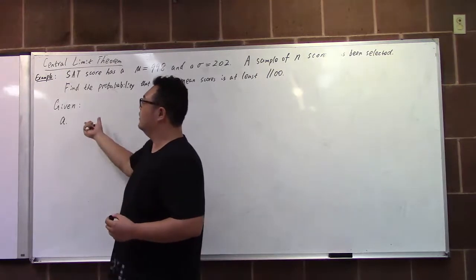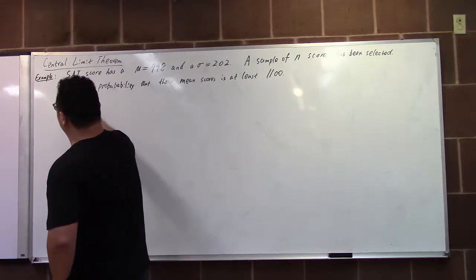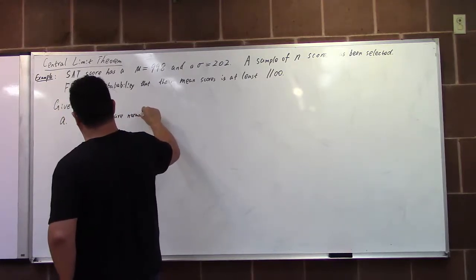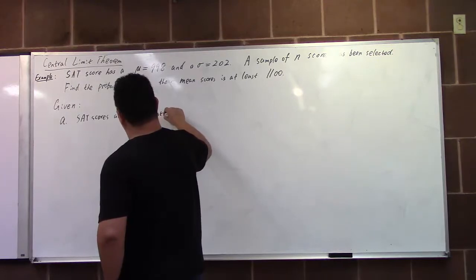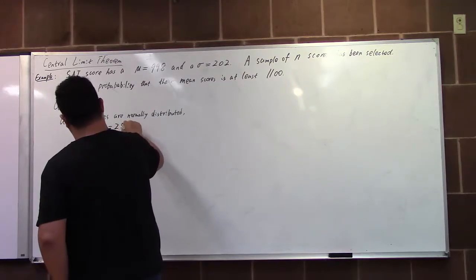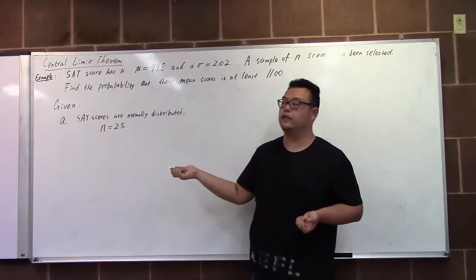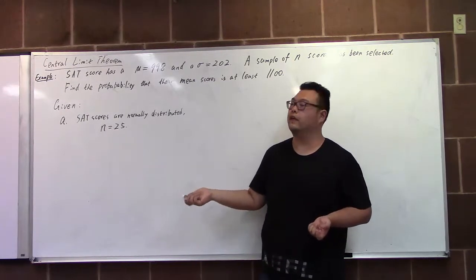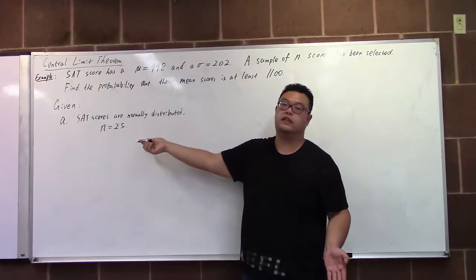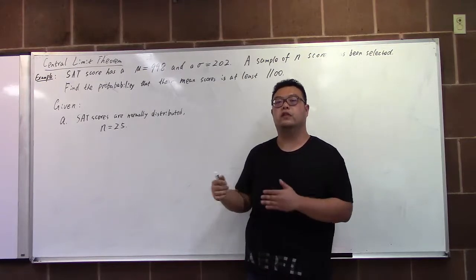Given the question, the problem didn't mention it clearly, but in the given parts we say SAT scores are normally distributed. For the first question, SAT scores are normally distributed and the sample size is 25. As long as the population is normally distributed, we do not need a large sample size — any sample size n can make the sample mean follow the normal distribution.